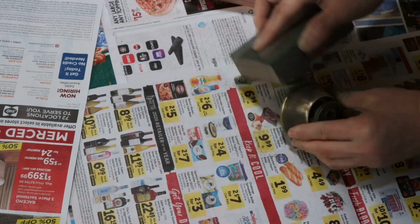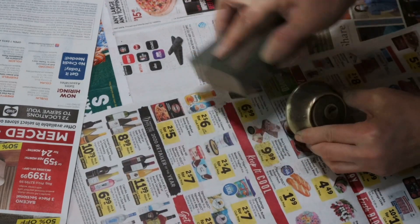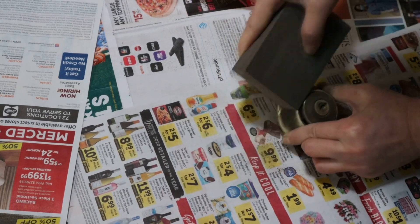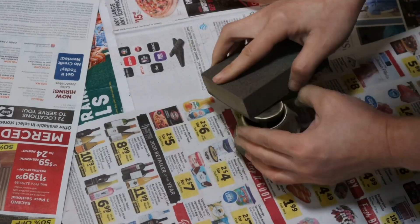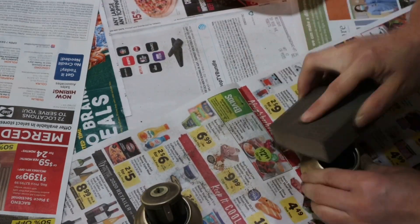I used 220 grit sandpaper to sand down the lock set first, then spray painted them with Rustoleum matte black, so the color would match the doors.